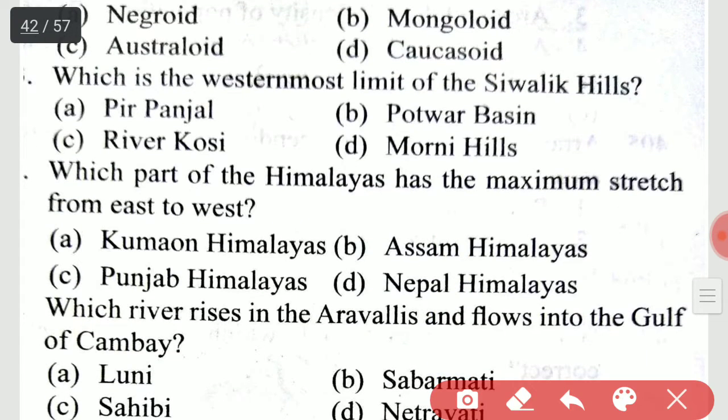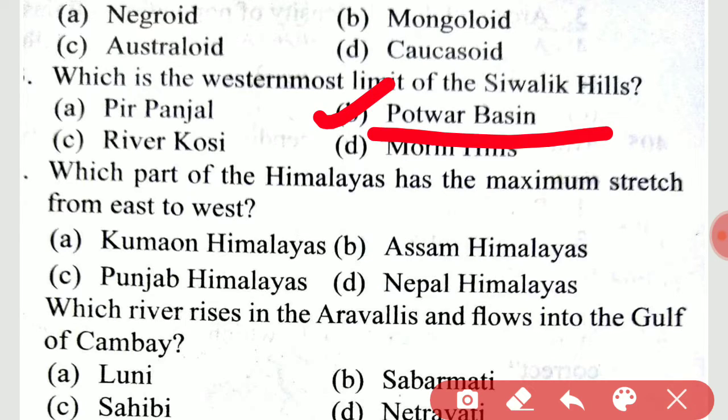Which is the westernmost limit of the Siwalik Hills? It is the Potwar Basin — the westernmost limit of the Siwalik Hills is the Potwar Basin.